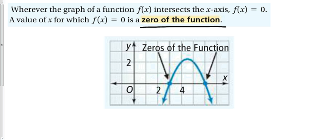Whenever a graph of a function intersects the x-axis, f of x equals zero. A value of x for which f of x equals zero is called a zero of the function. Most parabolas have two zeros, two places where the function crosses the x-axis. Sometimes there's one, sometimes there's not any, but most of the time there are two.